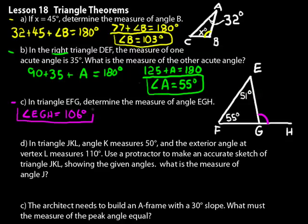Look at problem D. In triangle JKL, angle K measures 50 degrees. And the exterior angle at vertex L measures 110. Use a protractor to make an accurate sketch of triangle JKL showing the given angles, and then find out what the measure of angle J equals. Well, just take a protractor and you can extend some lines off. Just make a sketch to start with.